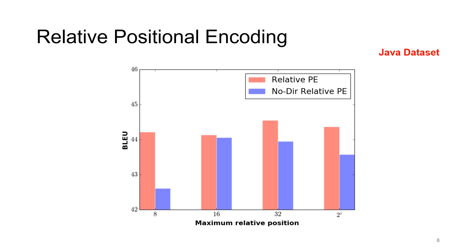In this bar plot, we compare the two forms of relative position encoding: in one form, source code is treated as a directed graph, while in another, it is considered as an undirected graph. The results suggest that source code should be viewed as a directed graph. In other words, when modeling the pairwise relationship between code tokens, whether a token is to the left or right of the target token should be emphasized.